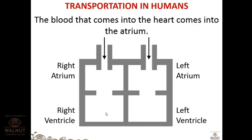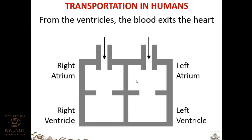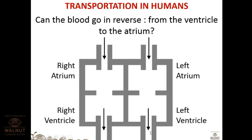For a rough overview: blood that comes into the heart enters the atria first. Atria are the chambers of the heart that receive blood. From the atria, blood flows to the ventricles. From the ventricles, blood exits the heart — as shown by the downward arrows in the diagram.